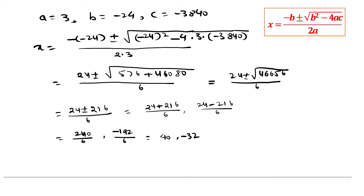Since speed cannot be negative, we discard the negative value minus 32. So the speed of the train is 40 km per hour.